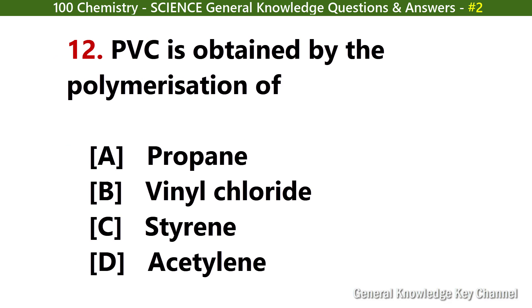PVC is obtained by the polymerization of? Answer B: Vinyl chloride.